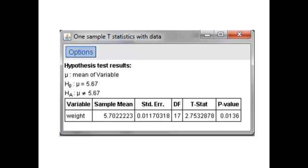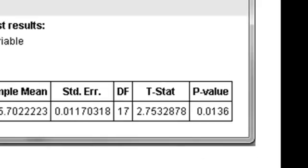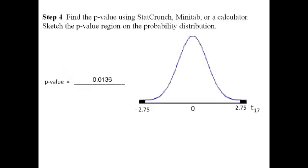And now that agrees with the result of our hypothesis test that I've run here in StatCrunch. We get a value of the test statistic to be 2.75 and its associated p-value as 0.0136. So I want to write down the p-value of 0.0136 and I want to sketch the p-value region on the t-distribution.